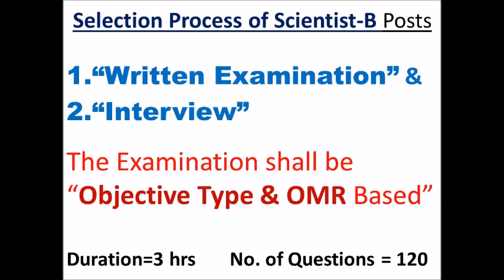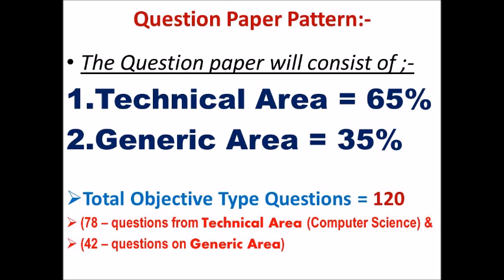The number of questions are 120 in the written examination. The question paper pattern is very important. It will consist of two areas: the first area is the technical area, which will consist of 65% of questions, and the second one is the generic area, which will consist of 35% of questions. Total questions are 120.